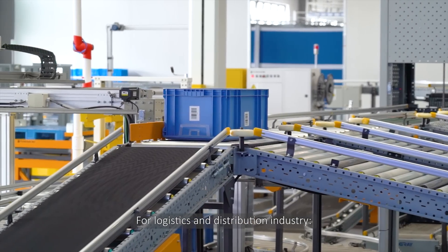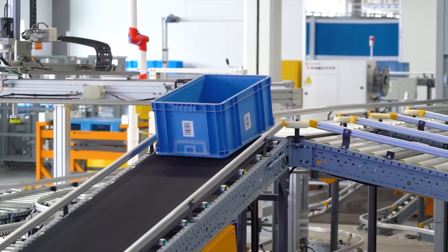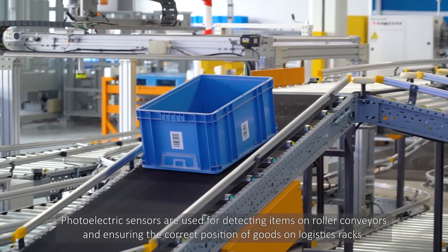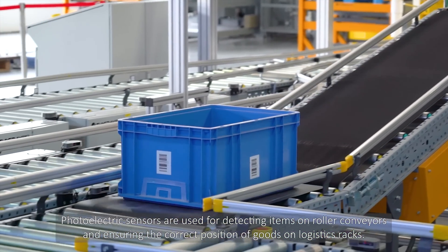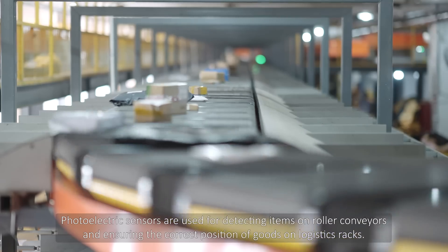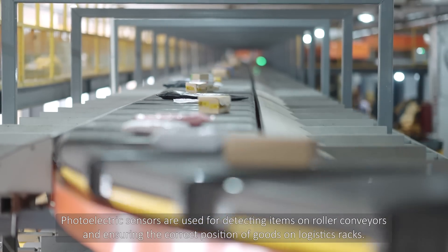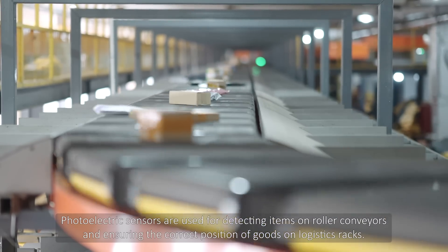For logistics and distribution industry, photoelectric sensors are used for detecting items on roller or other conveyors, and ensuring the correct position of cars in logistics racks.